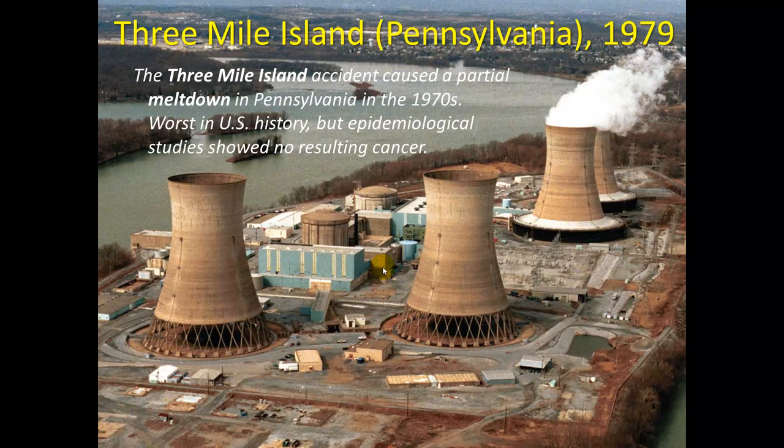There was one accident you should be aware of in 1979 — the only nuclear power reactor problem we've had in the U.S. There was a partial meltdown, the worst in U.S. history, but epidemiological studies show no resulting cancer. As they followed people who were exposed, they didn't see any health effects.